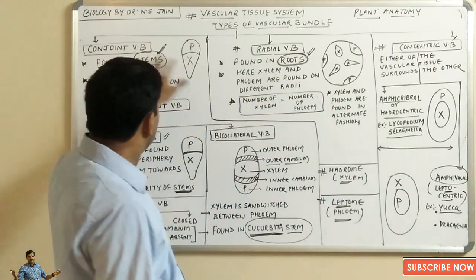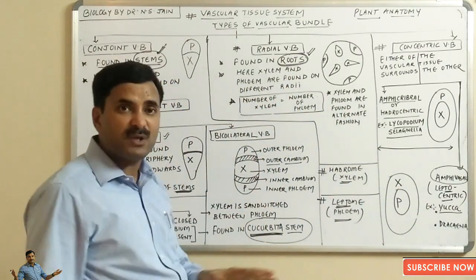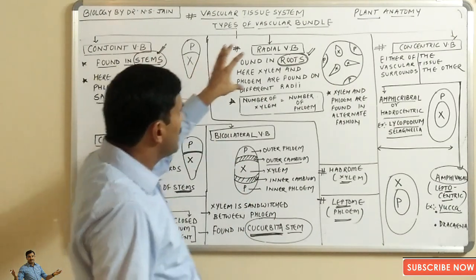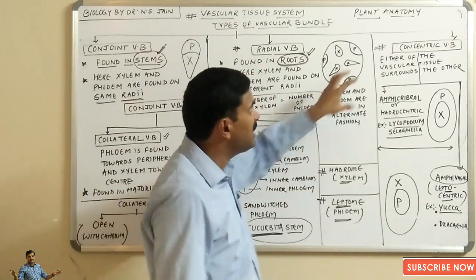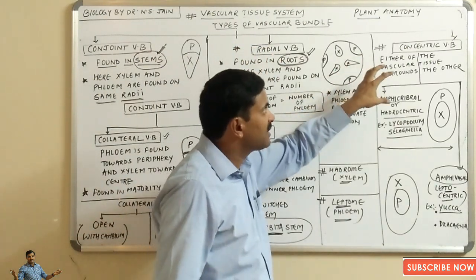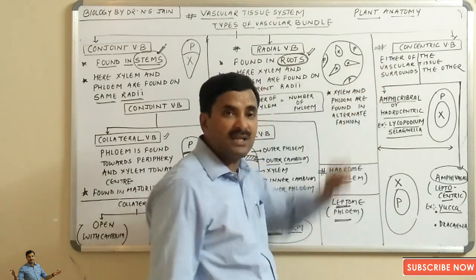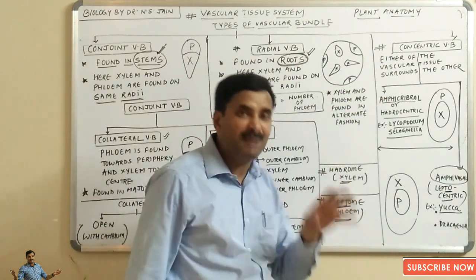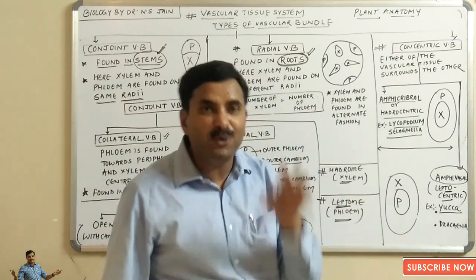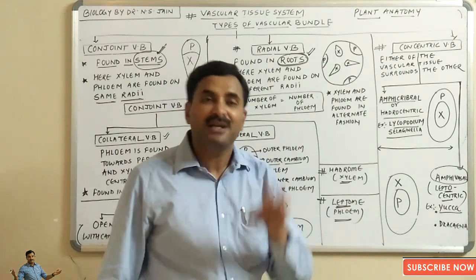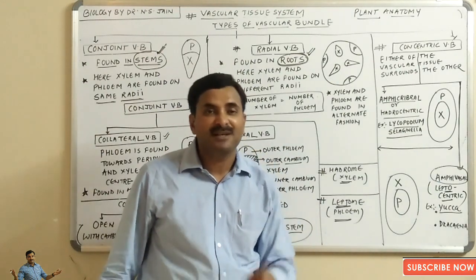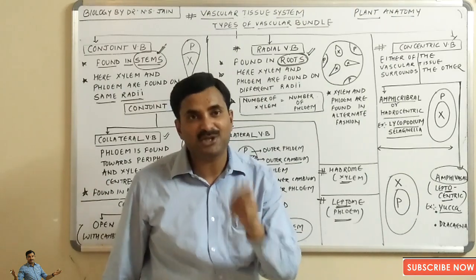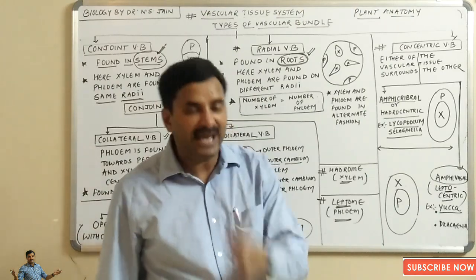Students, this was about the three types of vascular bundles: the conjoint vascular bundle, the radial vascular bundle, and the concentric vascular bundle. We will be coming soon with more videos on plant anatomy. Keep watching, subscribe to my channel, and like, comment, and share this video. Thanks a lot.